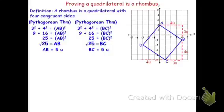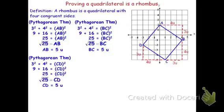I'm going to see that the other segment CD also has a triangle that has a leg of 4 and 3, which means when you use Pythagorean Theorem, also comes out to be 5 units.